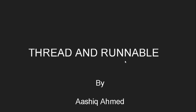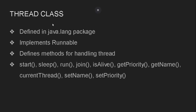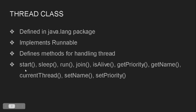So first of all we are going to talk about the Thread class. This class is defined in the java.lang package. This Thread class implements the Runnable interface and defines methods for handling a particular thread. The first method is start(), which is used for starting the execution of a thread. After we have created a new thread, if you want to start its execution, the start method will help.